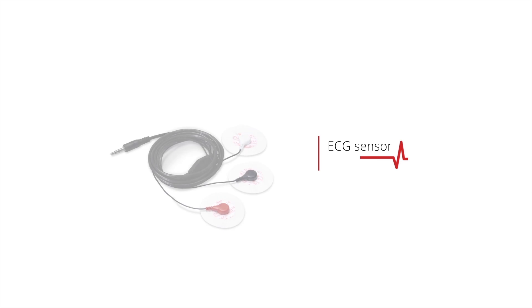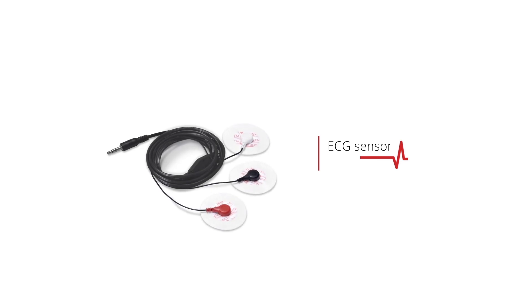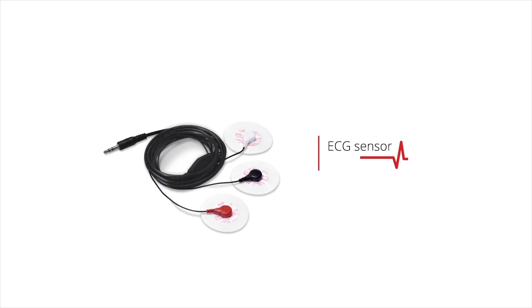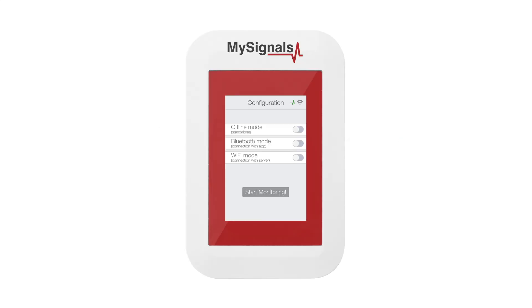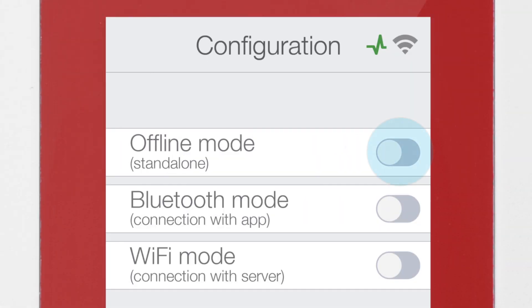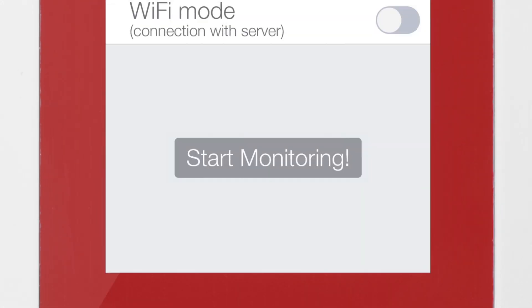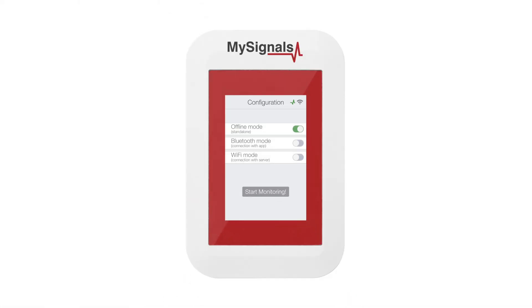How to use the ECG sensor in MySignals. First of all, power MySignals. It goes directly to the Configuration menu. Select Offline Mode in the menu and click on the Start Monitoring button.